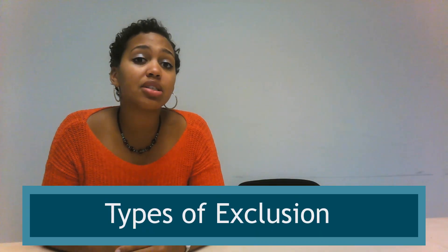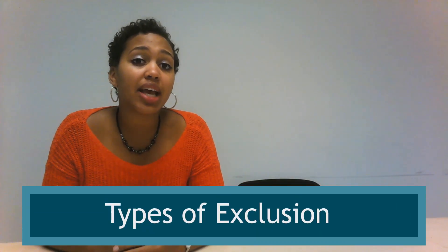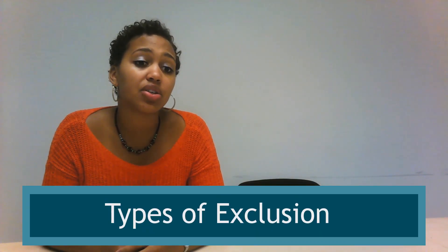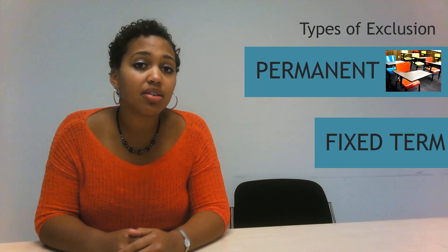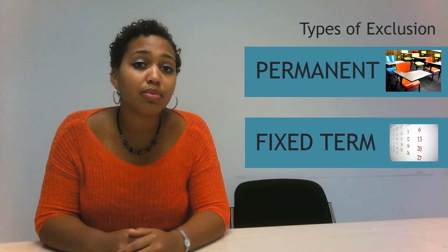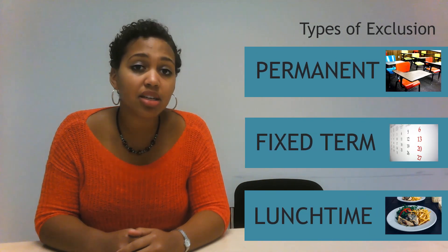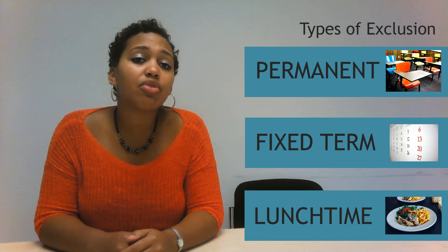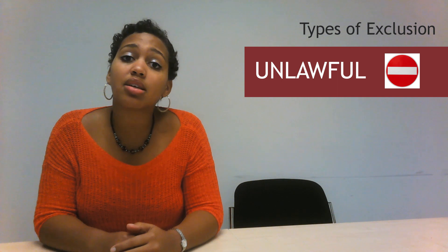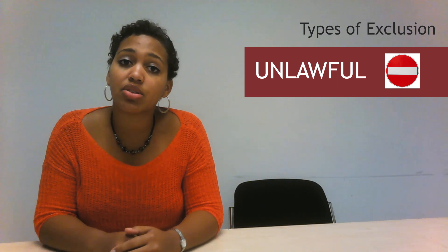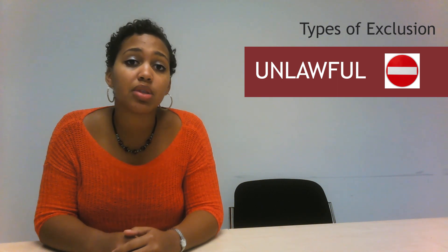This video is going to explain the different exclusions that a headteacher can consider when making his or her decision. There are three types of exclusion: permanent, fixed term, and lunchtime exclusions, and there are different rules that apply when considering each type. At the end we will discuss unlawful exclusions and what to do when this occurs.